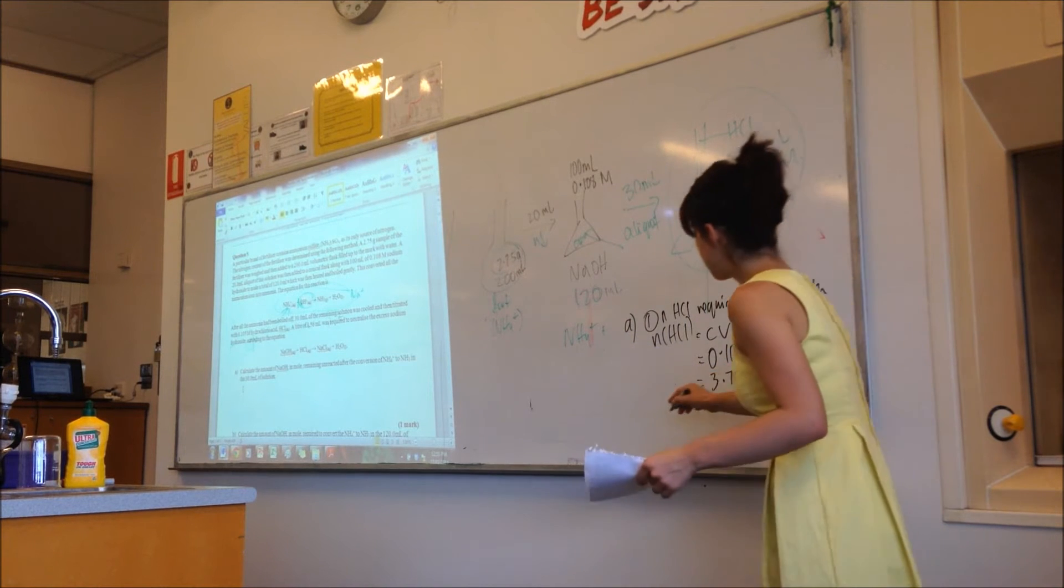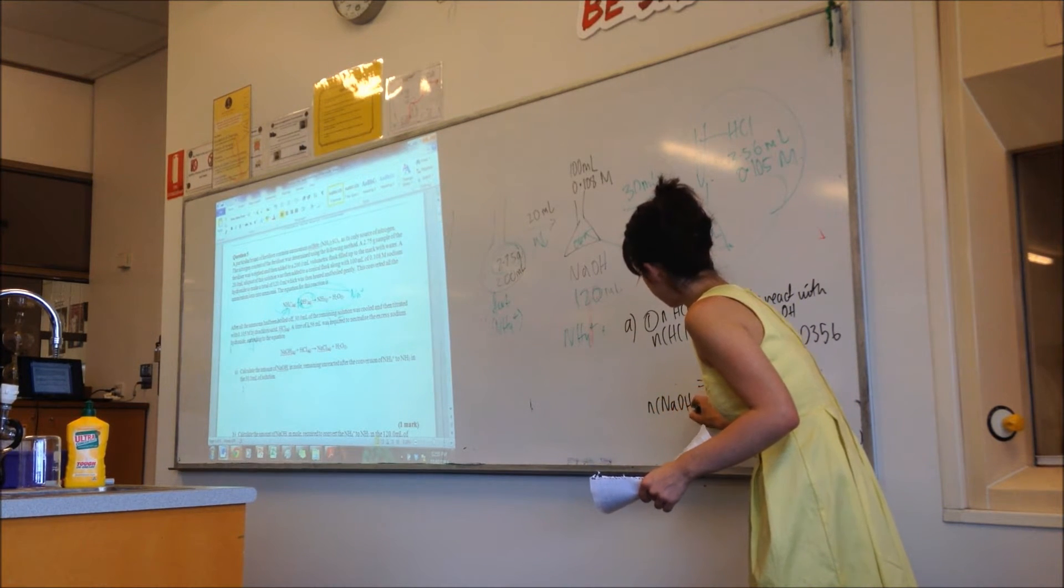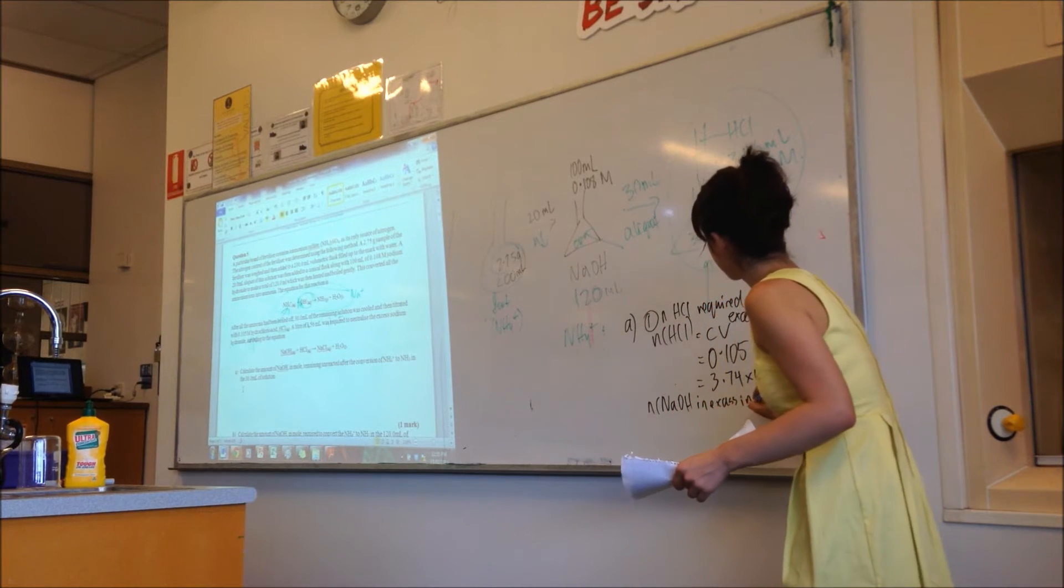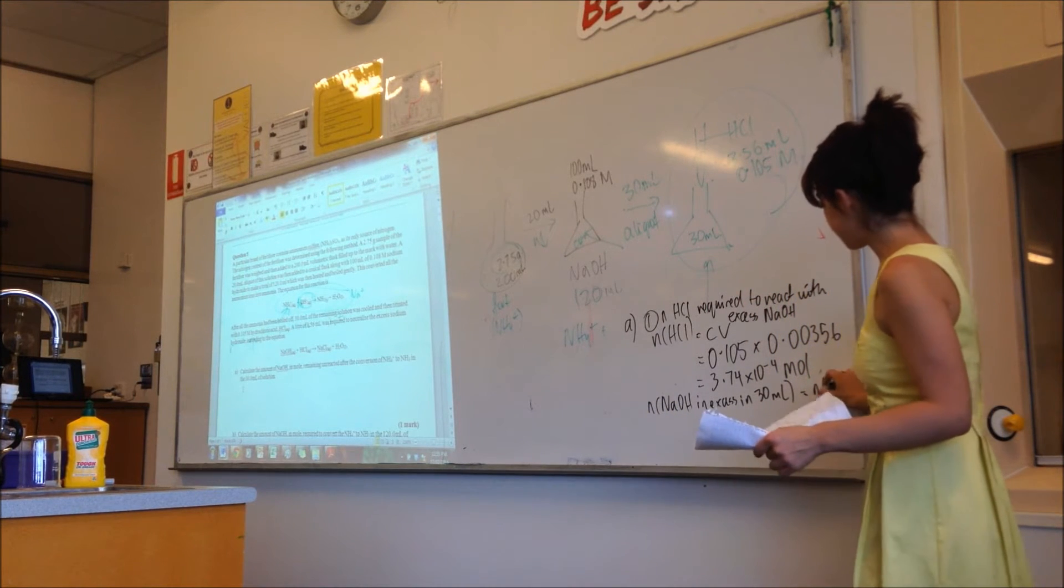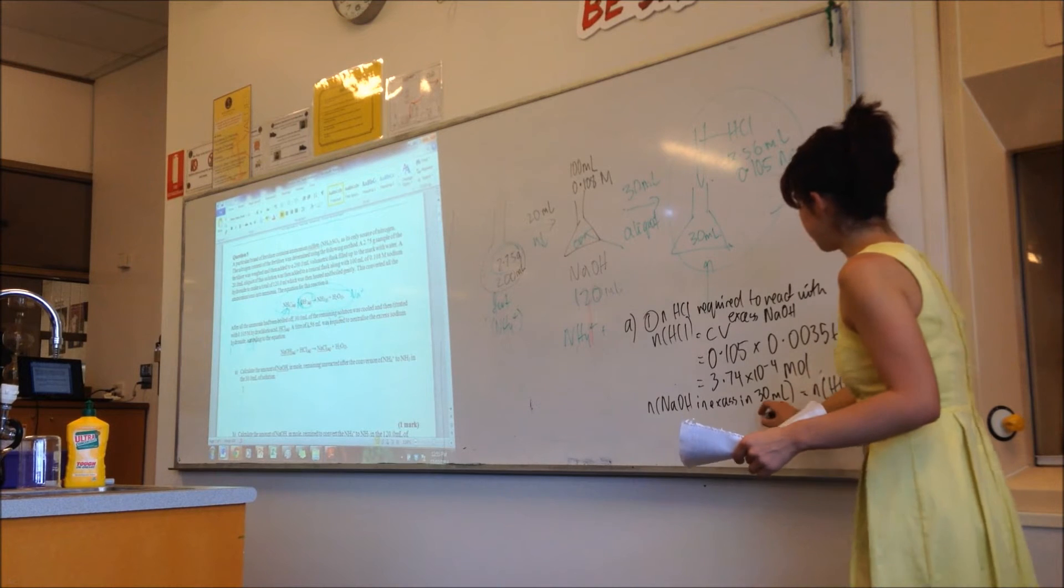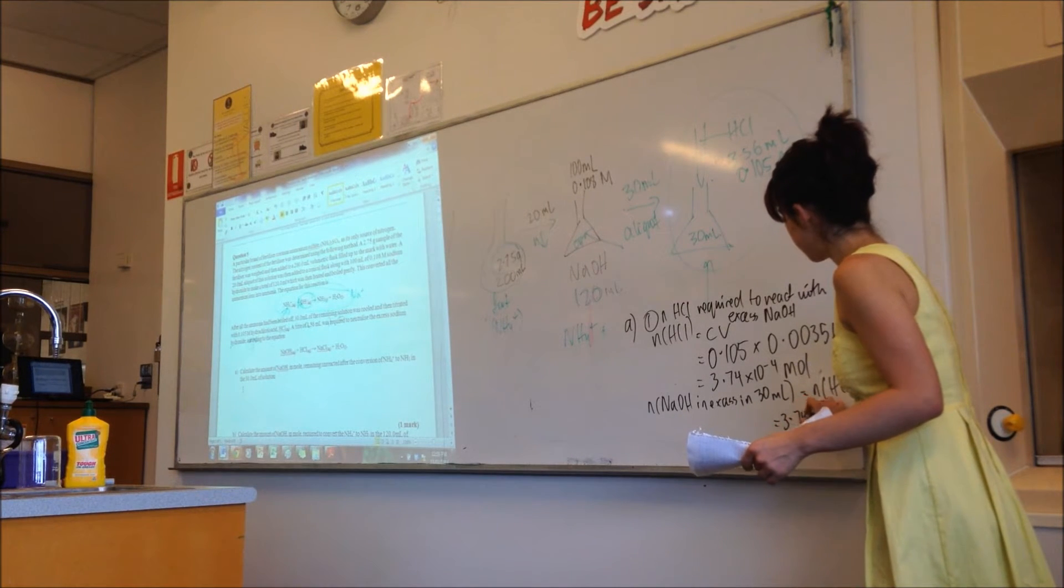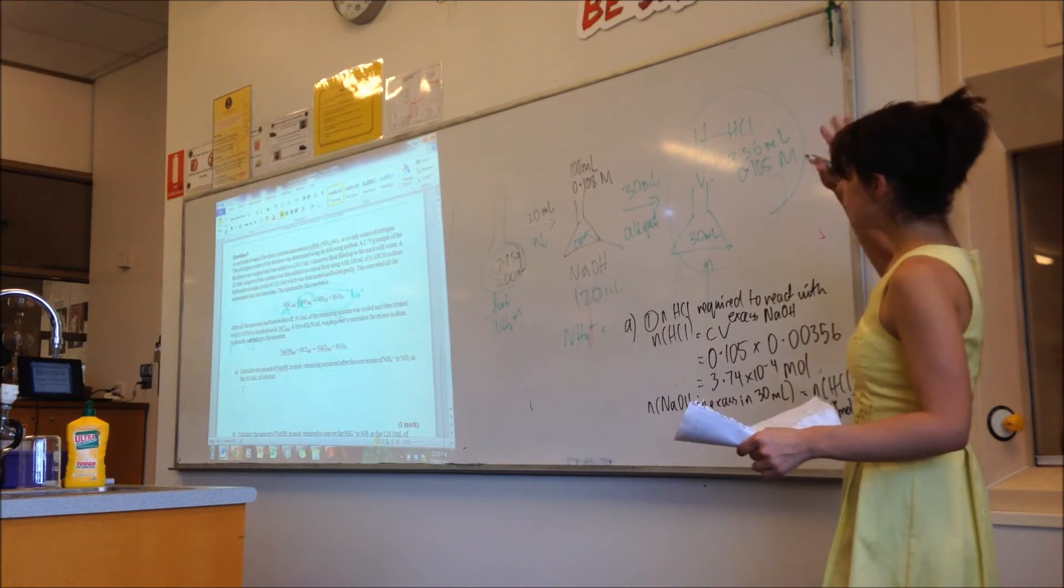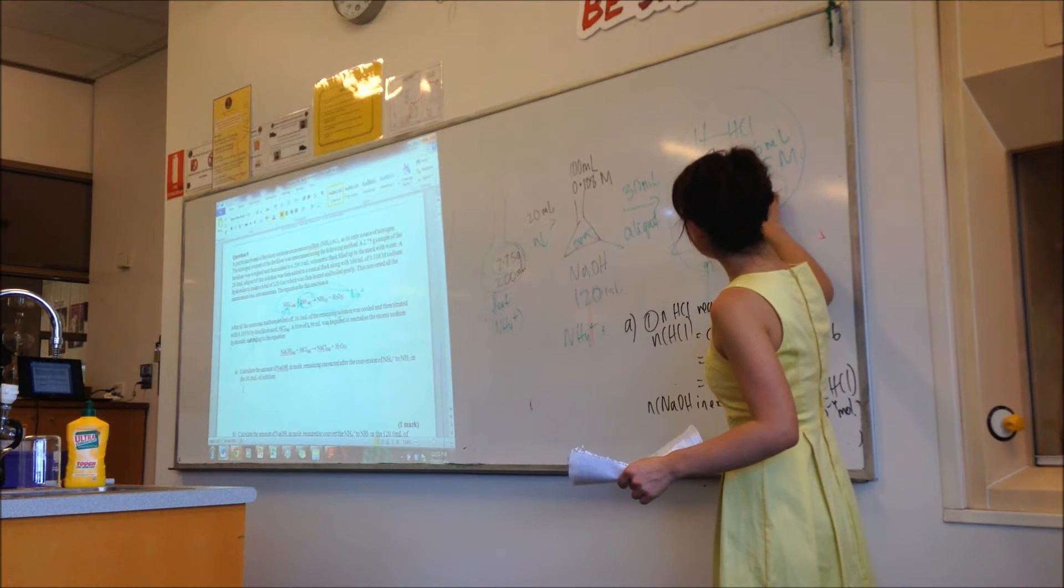Okay, so this is part A. Then how many moles of NaOH is in excess in the 30 mils? Excellent. 1 over 1 equals the moles of HCl equals 3.74 times 10 to the negative 4 mole. So, once you've got that, this is the moles of NaOH here.